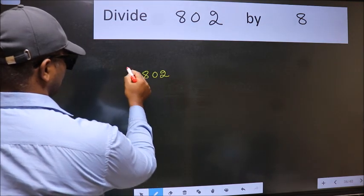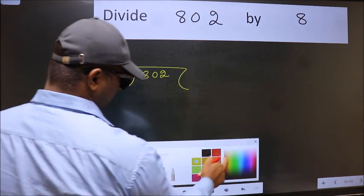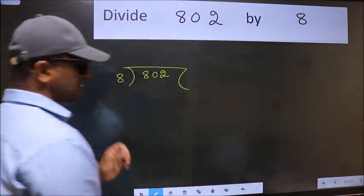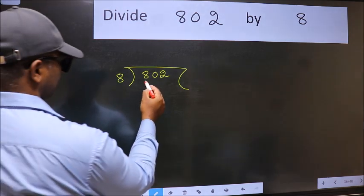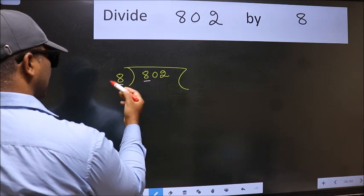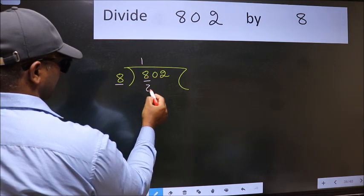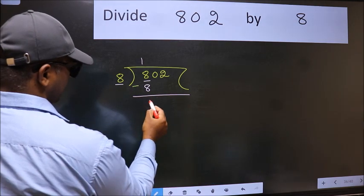802, 8 here. This is step 1. Next, here we have 8 and here 8. When do we get 8 in the 8 table? 8 once is 8. Now we subtract and get 0.